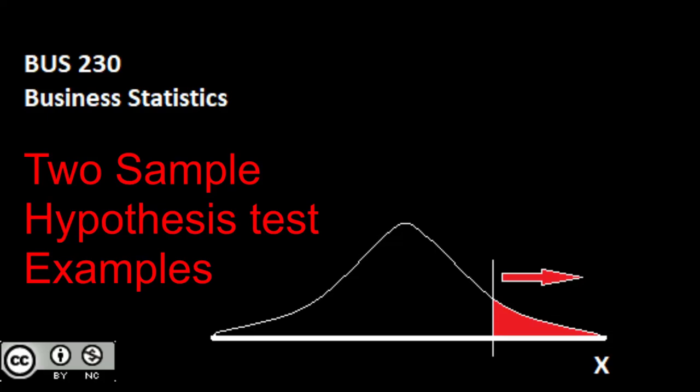In this video, we're going to take a look at our two-sample hypothesis tests, and we're going to be going through a bunch of examples. As we saw when we went through our two-sample hypothesis tests, we had a few examples for each one built in. Here, we're going to have at least one more example for each type.